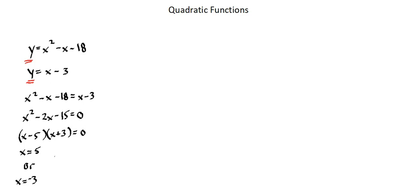And to find the y value associated with each of these x values, we can input the x value into either of the functions. The simpler function is the linear function, so y equals 5 minus 3, which gives us a y value of 2. And our first point of intersection is (5, 2). And for x equals negative 3, y equals negative 3 minus 3.